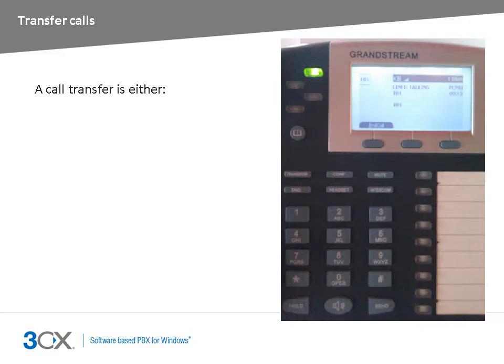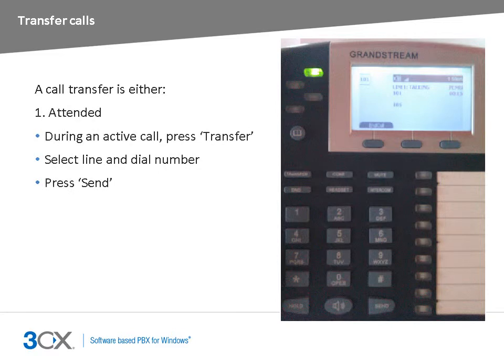A call can be transferred either using the attended transfer or unattended transfer method, also known as blind transfer. If a transfer is attended, the person performing the transfer can notify the receiving party of the transfer before the transfer is affected. Using your Grandstream phone, you can perform an attended transfer while already on an active call by pressing the transfer button.